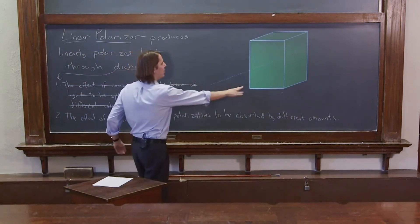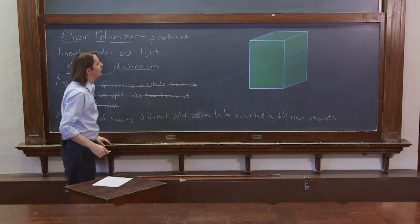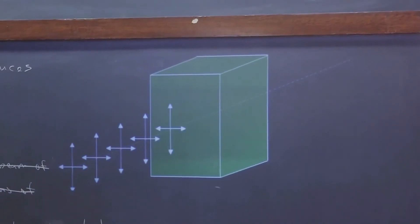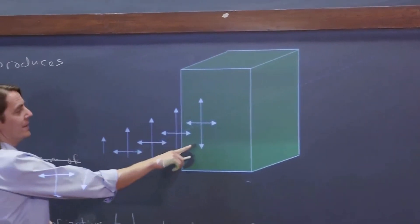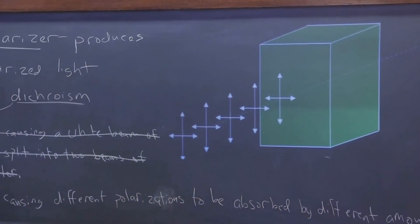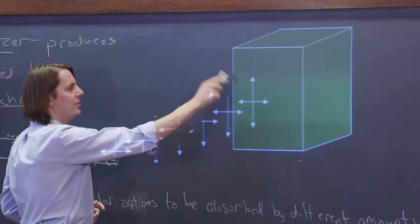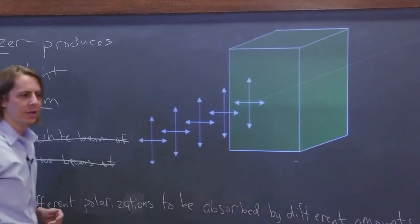So let's look at what it would look like. So here is a material that we're going to say is going to act as a linear polarizer. Here's an optical axis going through the material. And here is light that is going to hit the material and go through. And when we say the effect of causing different polarizations to be absorbed by different amounts, we mean that one of these is going to go right through and the other is going to be absorbed.